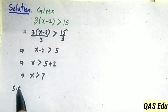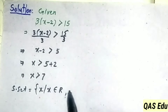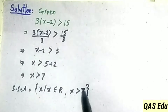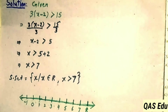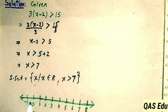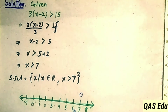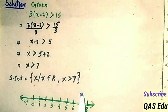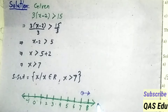The solution set is where x belongs to real numbers, with the restriction that x is greater than 7. On the number line, since 7 is not included, we draw an empty circle at 7. All numbers greater than 7 are on the right side of the number line, so we draw the solution set representation on the number line.